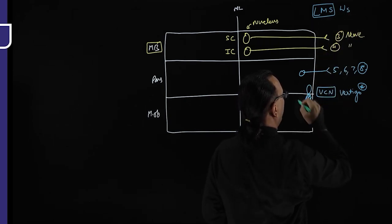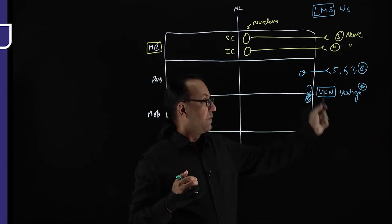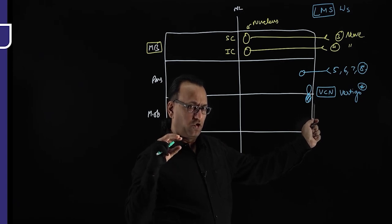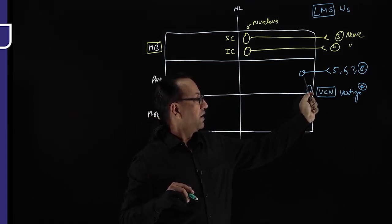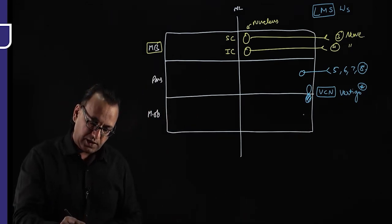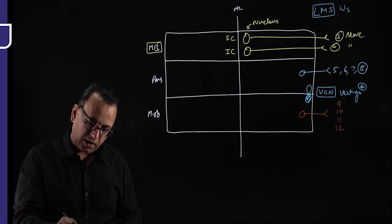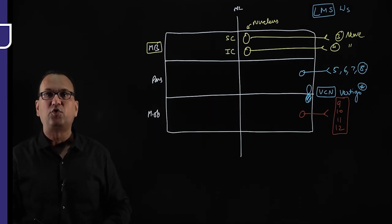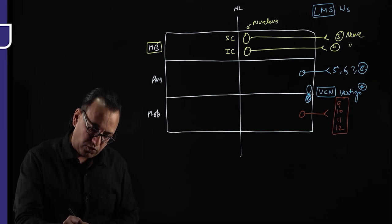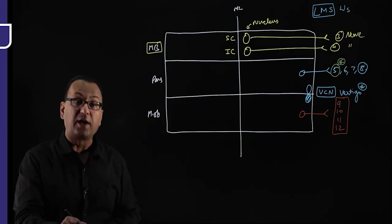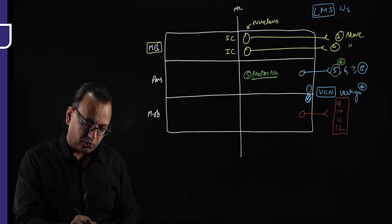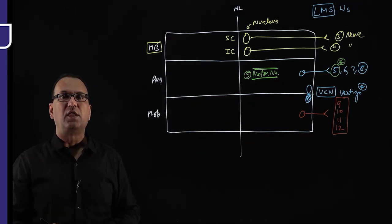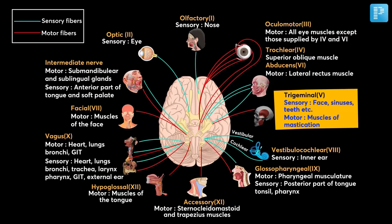Although nuclei are generally restricted to particular brainstem segments, there can be overlap. Cranial nerves 9, 10, 11, and 12 generally have nuclei in the medulla oblongata. The fifth nerve nucleus is not only in the pons — it extends into the midbrain and medulla oblongata. The motor nucleus of the trigeminal nerve, controlling the muscles of mastication, is in the pons. Sensory nuclei are located more laterally.